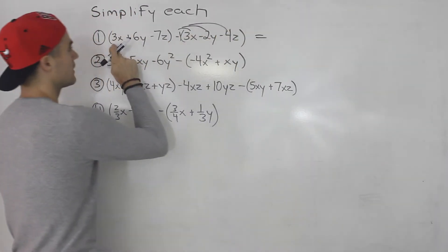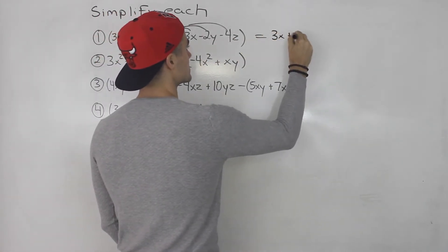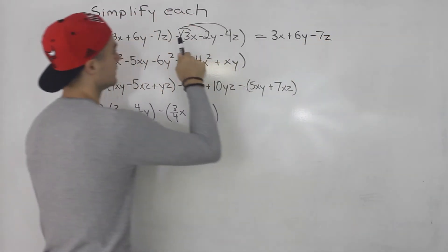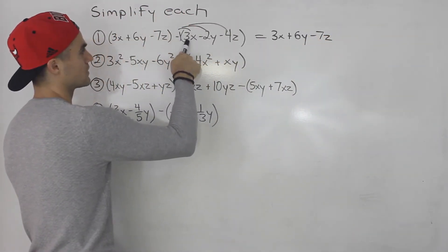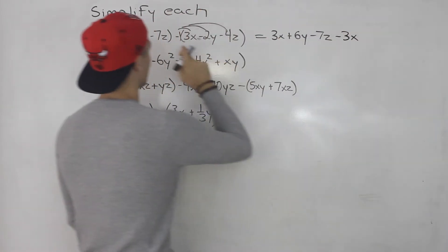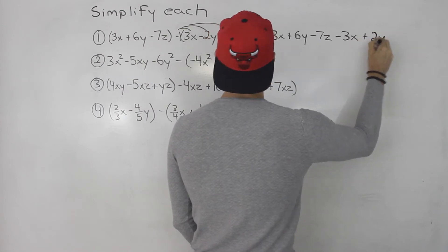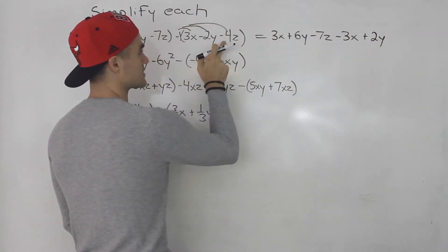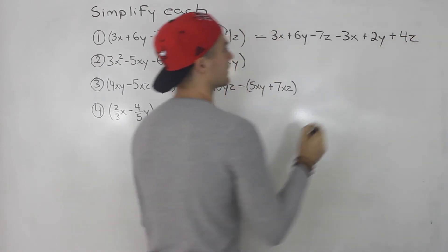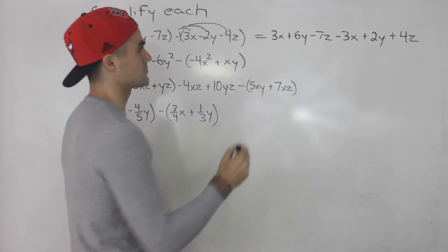So we rewrite this as 3x plus 6y minus 7z. Distribute the negative: negative 1 times 3x is negative 3x, negative 1 times negative 2y is positive 2y, and negative 1 times negative 4z is positive 4z. Now that the brackets are all gone, you can just collect like terms.